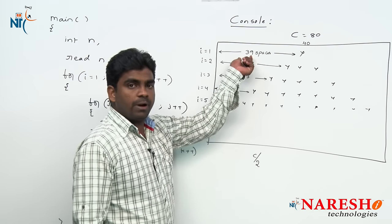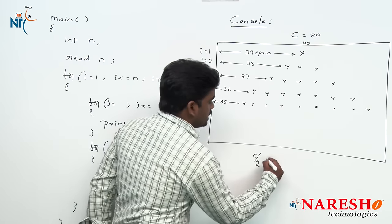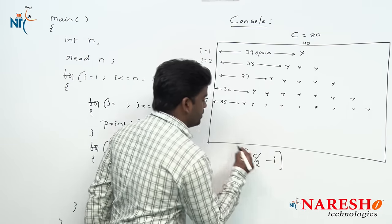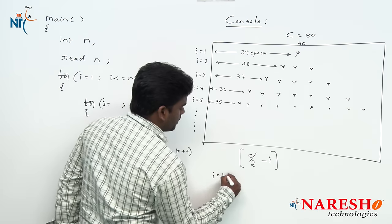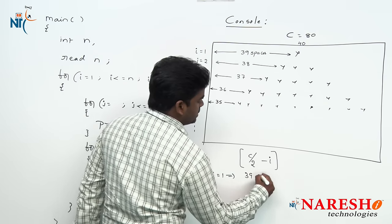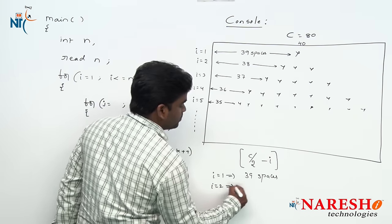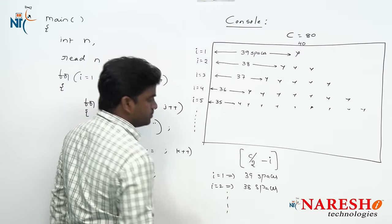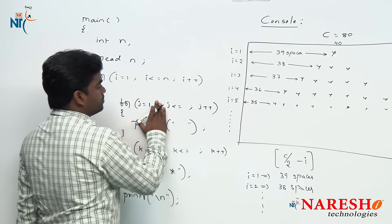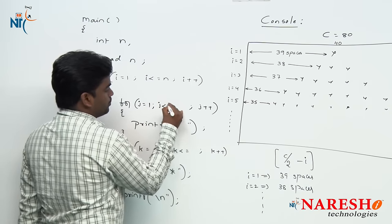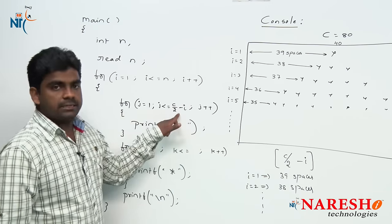The number of spaces decreases gradually: 39, 38, 37, 36, 35. Using the formula c/2 minus i to print spaces — that is 40 minus i. When i equals 1, the number of spaces is 39, because 40 minus 1 equals 39. When i equals 2, it is 38 spaces, and so on. So j starts at 1, j is less than or equal to c/2 minus i — that is the logic, c/2 minus i, which gives 39.